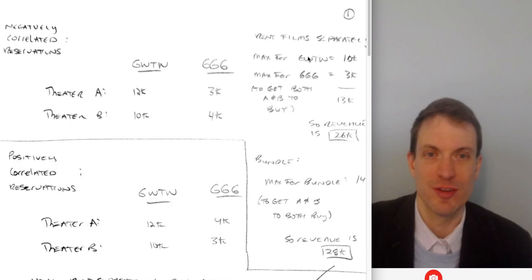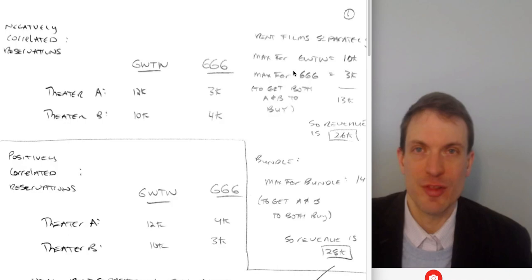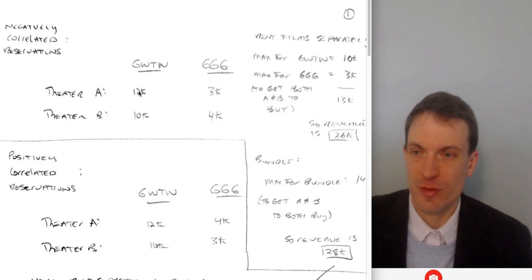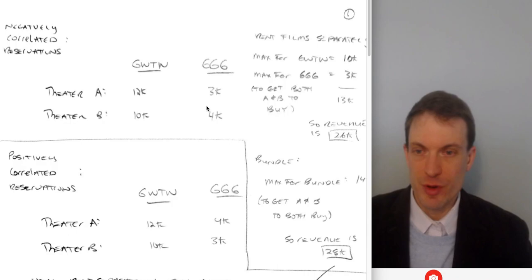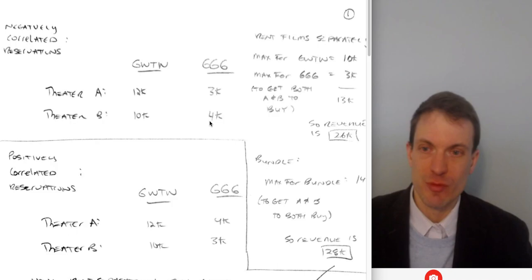Suppose the films were rented separately. If we're just going to sell these individually, what price do we want to set? The highest price we actually want to set for Gone with the Wind is 10K if we're selling them separately, and the highest price for Getting Gertie's Garter is 3K. Suppose we set Gone with the Wind at 12K — who buys? Only theater A, so our revenue is 12K. Suppose we set 4K for Getting Gertie's Garter — who buys? Only theater B, so revenue is 4K from GGG for a total of 16K.